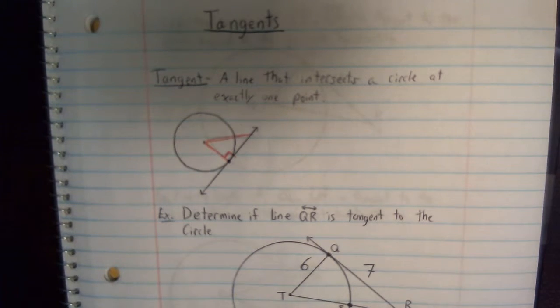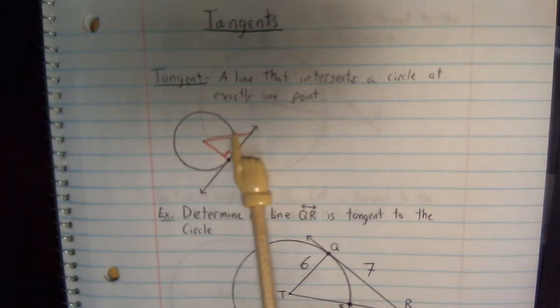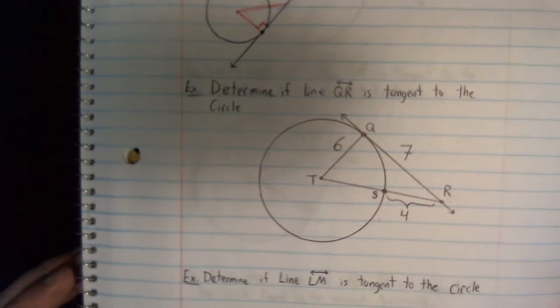So a lot of these problems are going to be involving Pythagorean theorem. And if they're not using Pythagorean theorem, we're going to be using trig, because again, you should notice a right triangle. So that's pretty important having to do with tangents. So let's look at the first couple of problems.